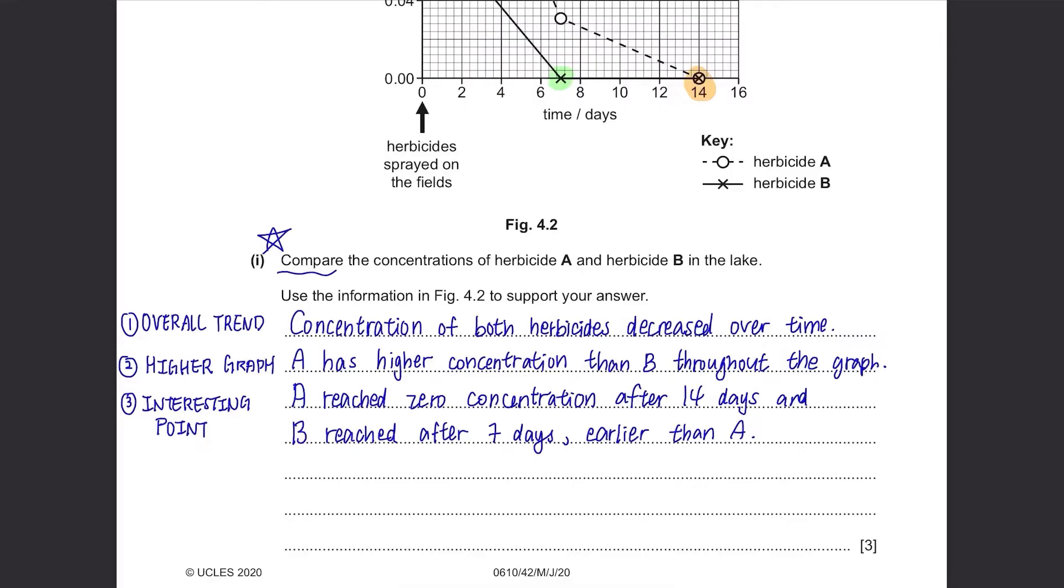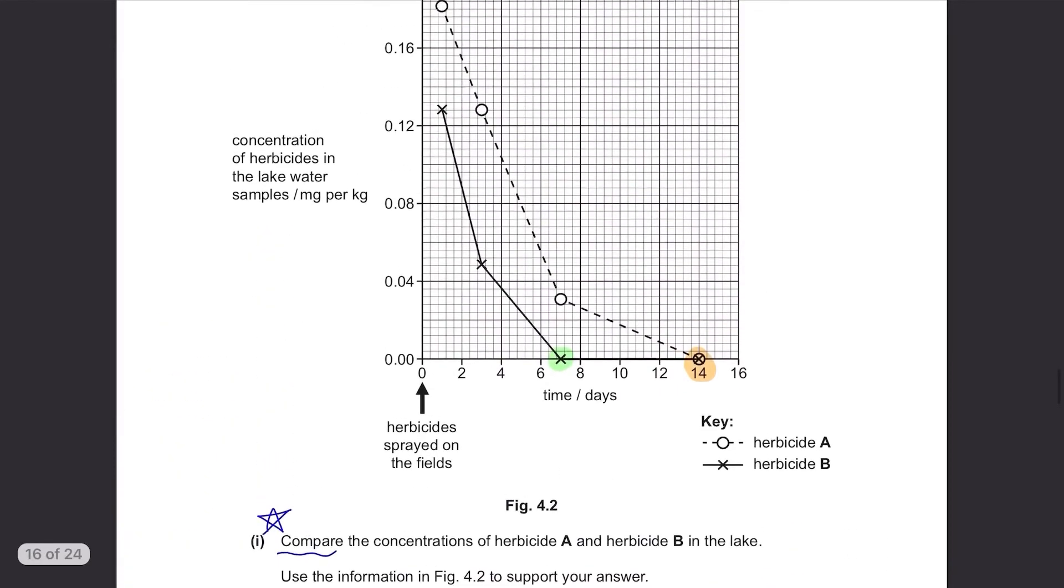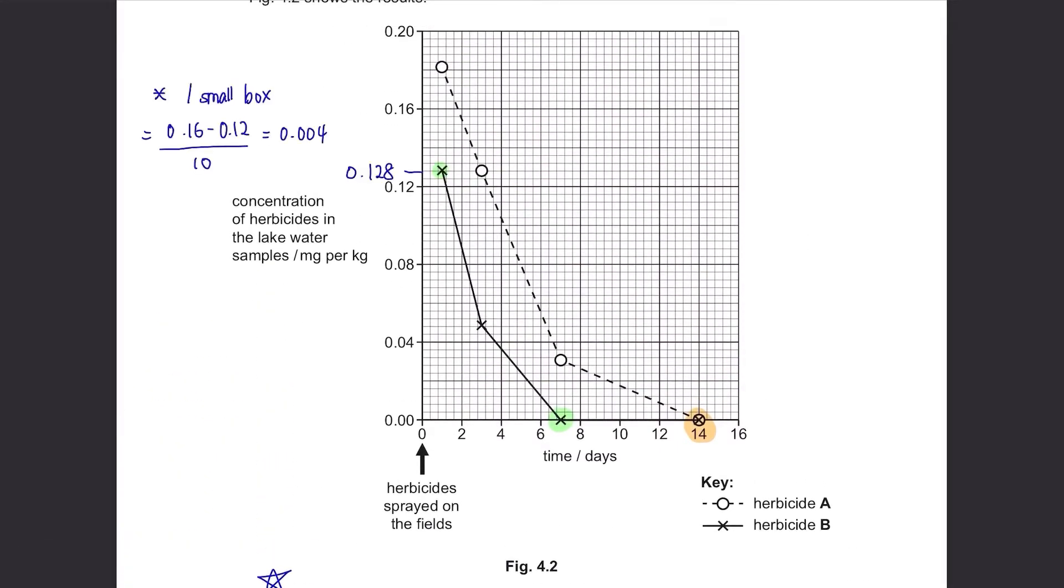We also need to include some comparative data so write about the initial concentration. It started from 0.128 mg per kg for herbicide B and 0.18 mg per kg for herbicide A. You must include the units. You can also compare the gradient of each graph. Graph for herbicide A is steeper than B in the beginning.